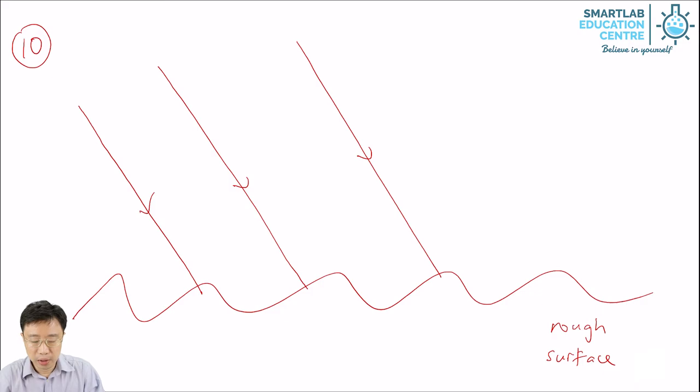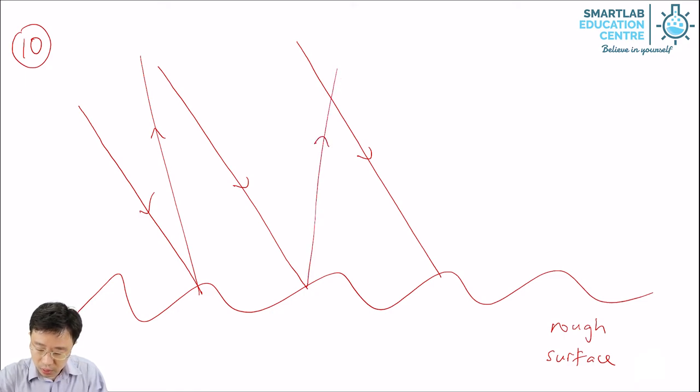What happens is that the rays will be reflected in all directions, for example, like this here, like this here, or like this here. And so, what comes in parallel are not reflected parallel. This is the kind of reflection you have with rough surfaces.